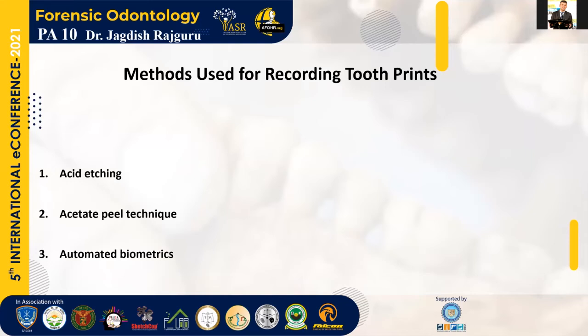There are three techniques we use to record the tooth print. First is acid etching. Second is acid peel technique. Third is automated biometric technique. In all three techniques, we see the utilization of 10% orthophosphoric acid. This 10% orthophosphoric acid will dissolve or demineralize the organic component and will show widening of the enamel rod area, adjacent to the enamel rod, so you can easily take a print. Under electron microscopy, the enamel rod is rod-shaped internally. By utilization of 10% orthophosphoric acid, we can see all these patterns.